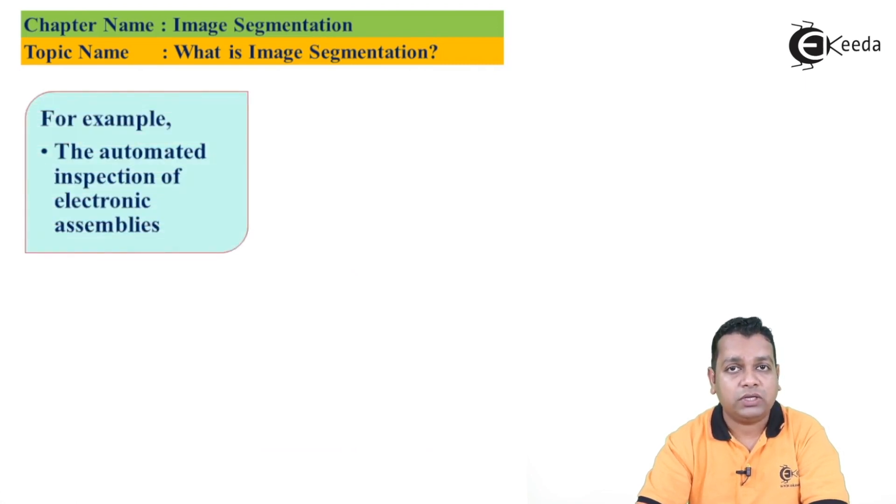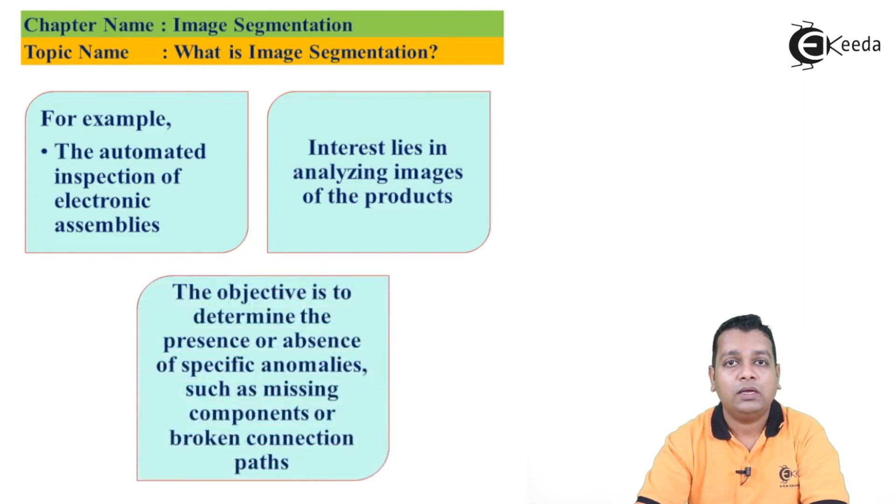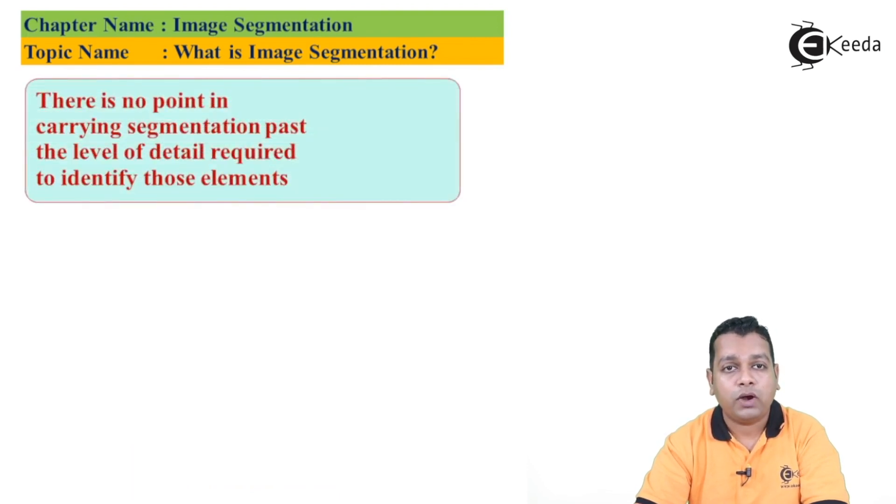Let us take the example to get this step into more details here. The example is of the automated inspection of the electronic assemblies. So here in this particular example, our interest lies into analyzing the images of the products being automated inspected here. So here the objective is to determine the presence or absence of the specific anomalies such as the missing components or broken connection parts. So there is no point in carrying the segmentation past the level of the detail required to identify those elements.